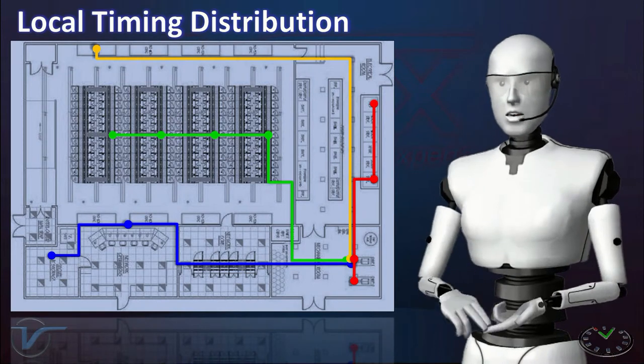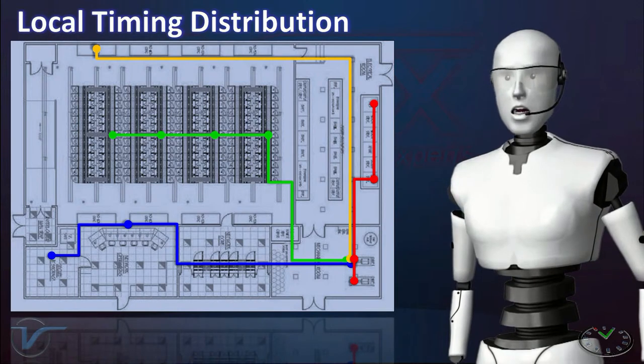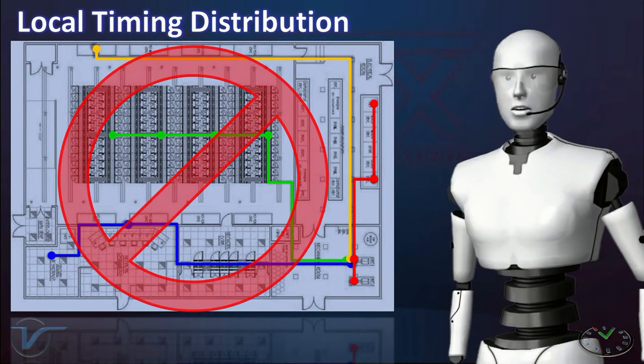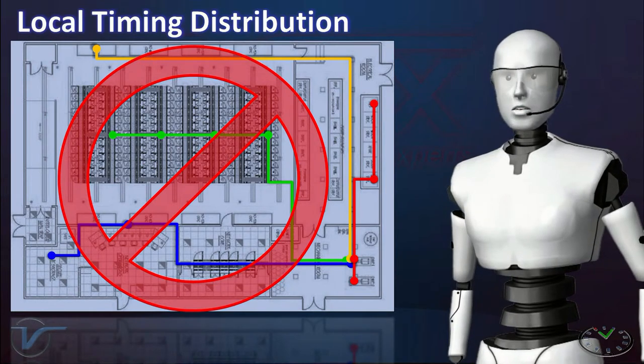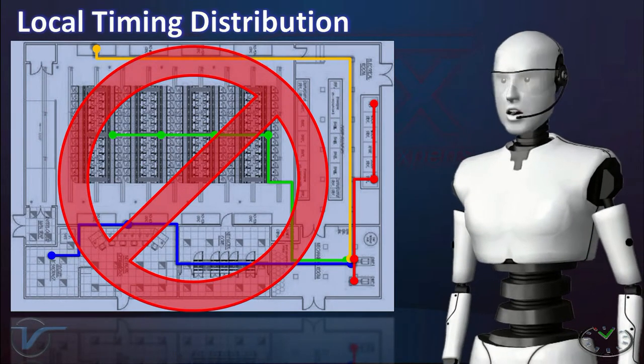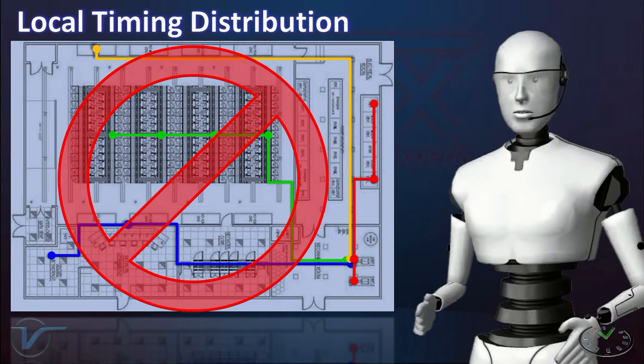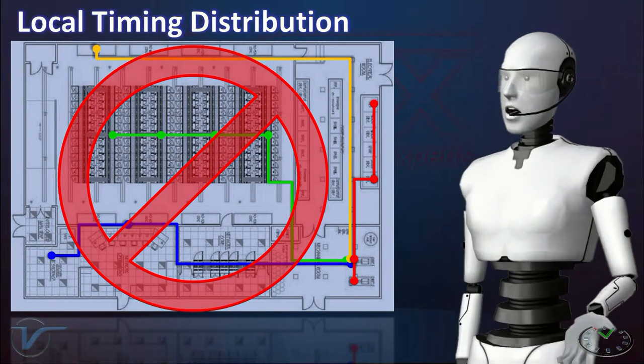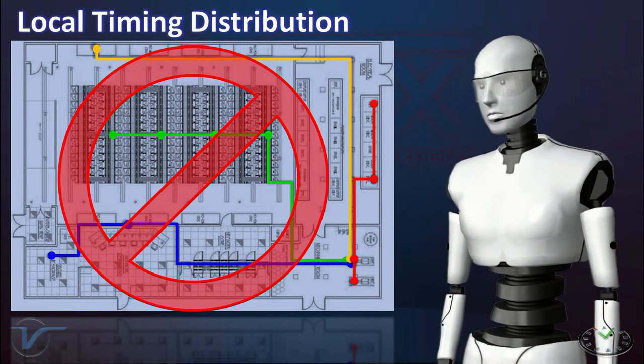But if you want that one PPS pulse to arrive at the same time to all the network elements that need to be synchronized, then you better think twice. Even at a small site, it would not be uncommon to find 100 meter, or 330 feet cables. That would be 0.5 microseconds, and we are talking about a maximum of 1.5 microseconds total, end to end.